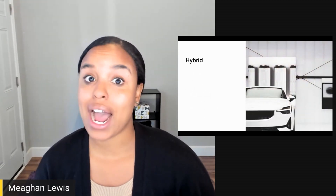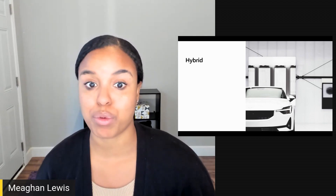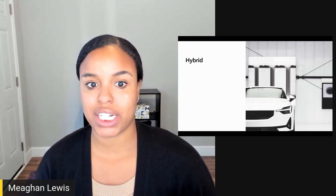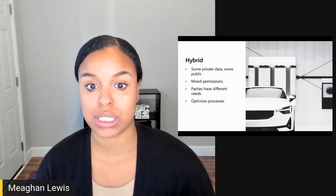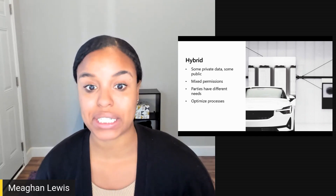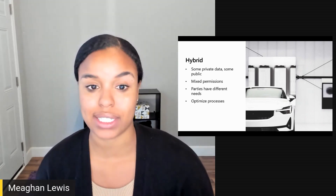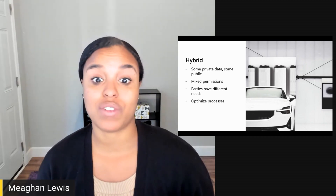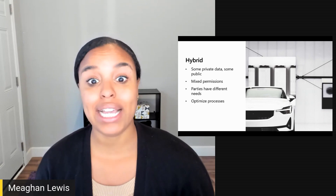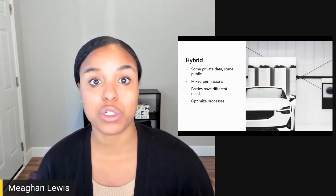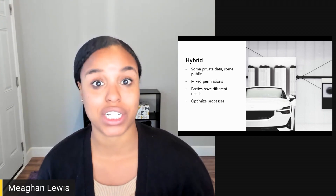And finally, let's talk about hybrid blockchains. Hybrid blockchains are really a mix between public and private. This allows the blockchain to have some private data and some public data. Hybrid blockchains combine the benefits of both blockchain types while trying to limit the disadvantages and optimize the process. A good example of a hybrid blockchain is Ripple. Ripple enables banks, payment providers, digital asset exchanges, and corporations to send money globally using blockchain technology.